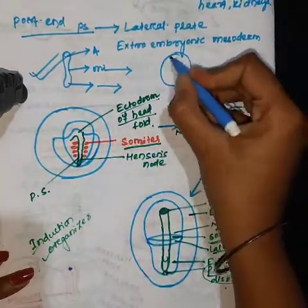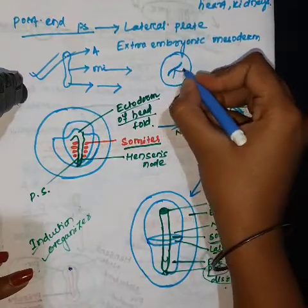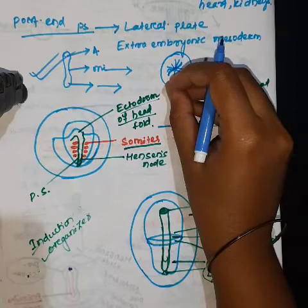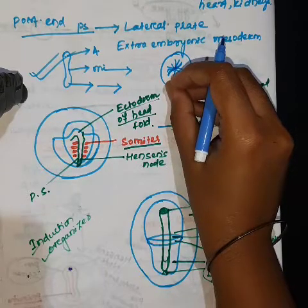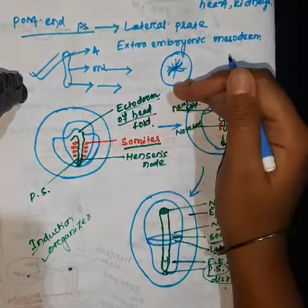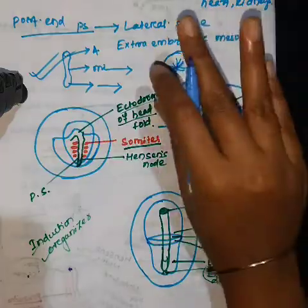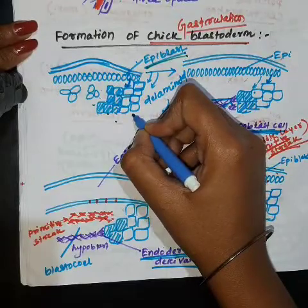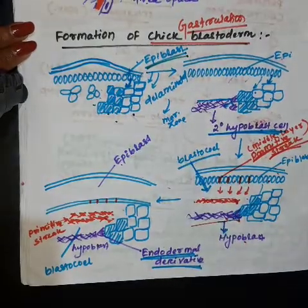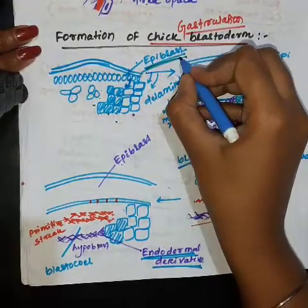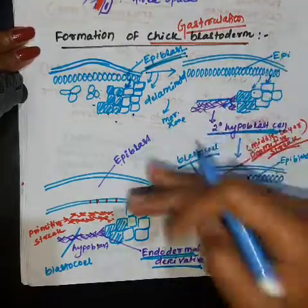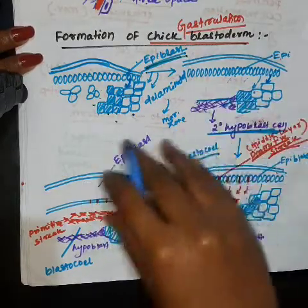The primitive streak begins with cleavage of the blastodisk — that is, the division which forms the cells of the epiblast. Those epiblast cells then migrate. The endodermal cells, which are present just below the epiblast cell, migrate anteriorly and eventually displace the hypoblast cell. The epiblast cell is delaminated to form the hypoblast cell, and everything originates from the epiblast cell. The hypoblast cell is later displaced to form a second layer — the endodermal layer.